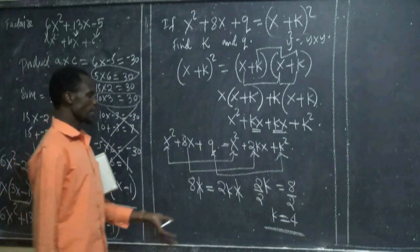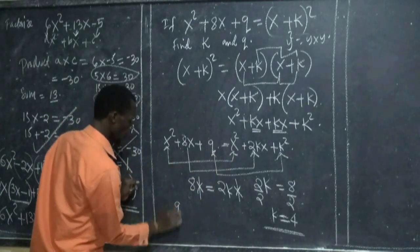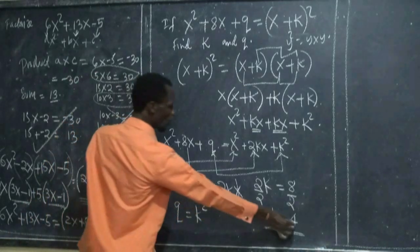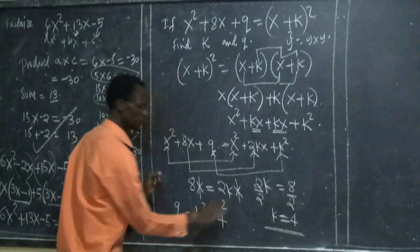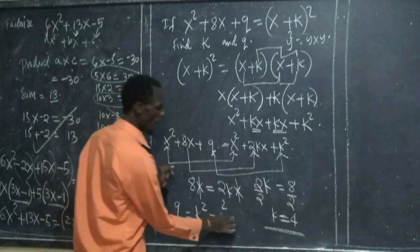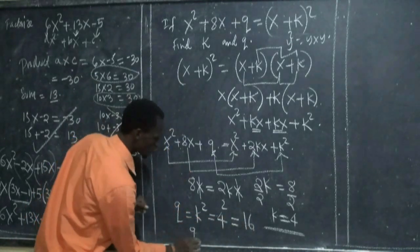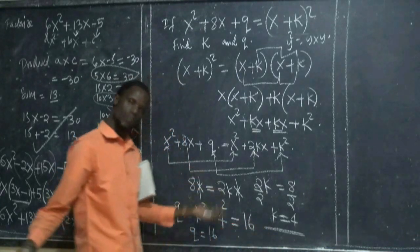If now k is equal to 4, but remember here, q is equal to k squared. But k is equal to 4. That is to say now is equal to 4 squared. Now 4 squared means 4 times 4 which is equal to 16. Therefore q is equal to 16 and k is equal to 4. This is what we need.